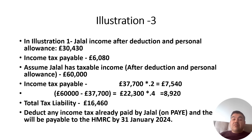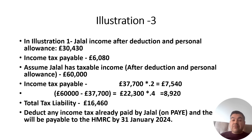Here's another example. Assume Jalal's income after deductions and personal allowance is £30,430, which falls under the basic rate limit of £37,700. All you need to do is multiply £30,430 by 20% — that gives you an income tax liability of £6,086.